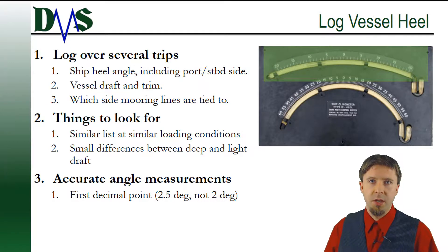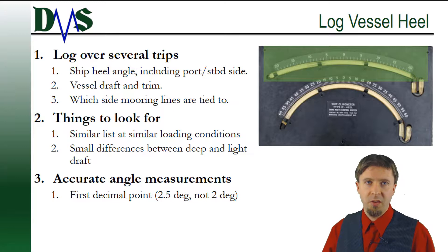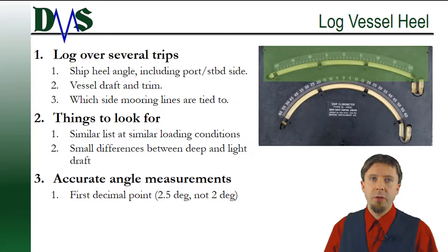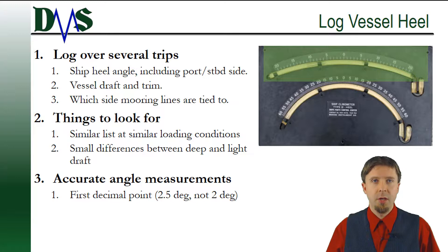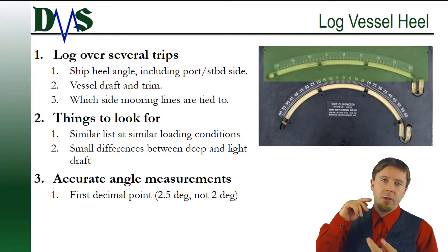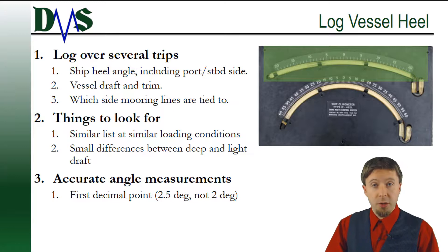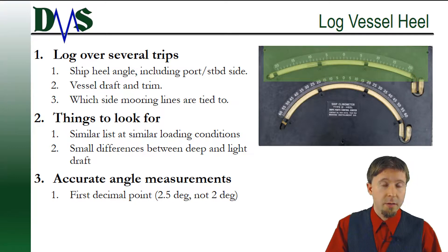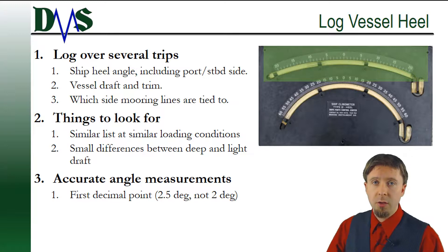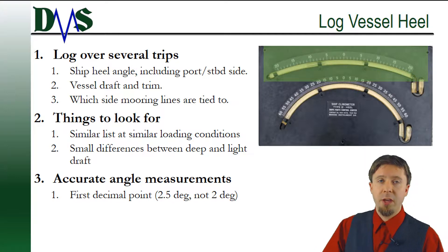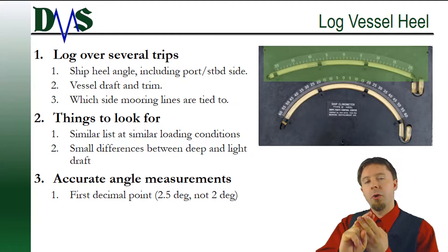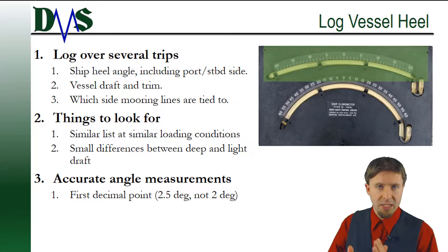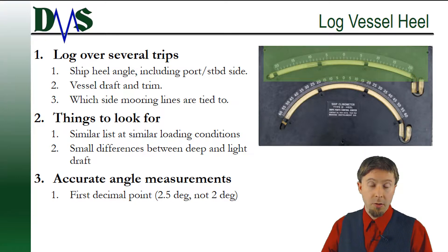The trick when finding a vessel list is to look for a consistent vessel heel. That's not very easy because your ship is always rolling around. So what you need to do is log your vessel's heel over several different trips. You're going to record your ship's heel angle, whether it was port or starboard side — keep track of those separately — and with each heel angle, also record the vessel draft, trim, and which side your mooring lines were tied to.